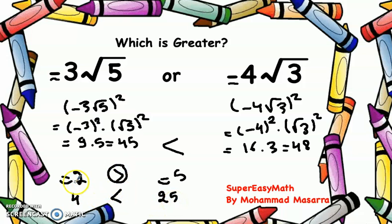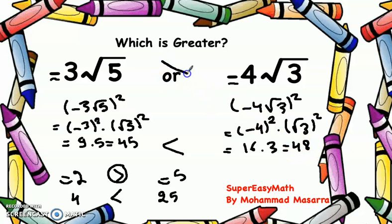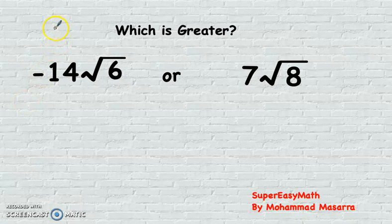So when dealing with negative numbers, the one that has the smaller square is the greater number. 4 is smaller than 25, so -2 is greater than -5. Going back to our example: 45 is smaller than 48, so -3√5 is greater than -4√3.